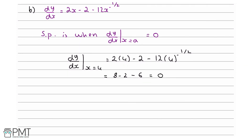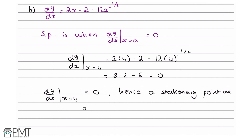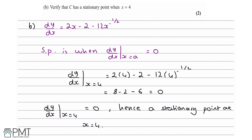We finish by giving a concluding statement: dy by dx at x equals 4 equals 0, hence a stationary point at x equals 4. This question is worth two marks. Your first mark comes from substituting x equals 4 into dy by dx. Your second mark requires both showing dy by dx equals 0 and stating hence a stationary point at x equals 4 — both are required; having only one does not earn credit.